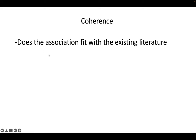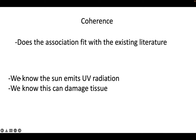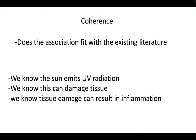Coherence is not bad, but not great either. Does the association fit with our existing literature? That's slightly different from biological plausibility. If we know the sun emits UV radiation, UV can cause tissue damage, and tissue damage can cause inflammation — it jives with what we already know. Biological plausibility is more about whether the mechanism makes sense, the actual cascade of events. Coherence is more about whether it fits the puzzle of what we know. To be honest, those two are very similar, and it can be hard to differentiate them.